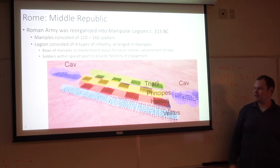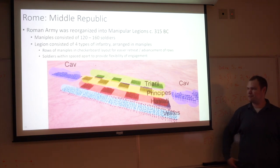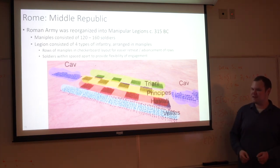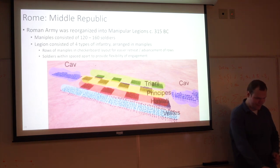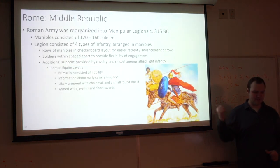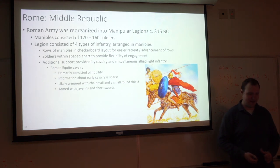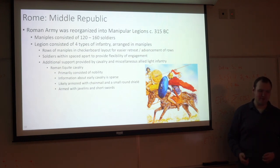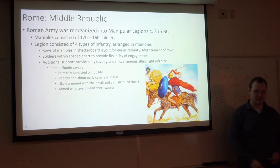Cavalry was never particularly important for Rome in any period, but especially during the early manipular days it really only carried a supporting role in most engagements. It mostly consisted of nobility. Information about early Roman cavalry is unfortunately pretty sparse, but we know they were usually armored with some chain mail and a small round shield, and their primary weapon would have been the javelin and then a short sword for close combat.